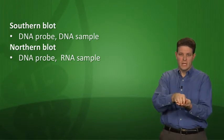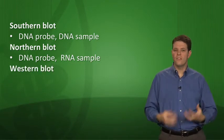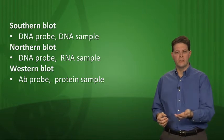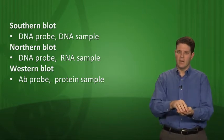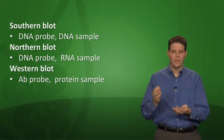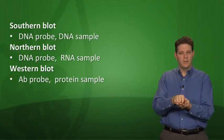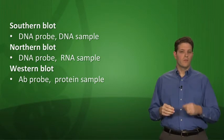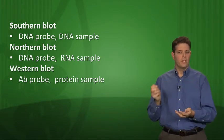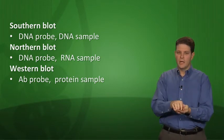Now with a western blot, your sample is a protein and your probe is an antibody. So you're using a labeled antibody probe to identify a protein sample. Labeled antibodies are used to bind to the relevant protein. So if you're looking for a very specific protein, you have a predetermined antibody that matches it. You'd be doing a western blot.